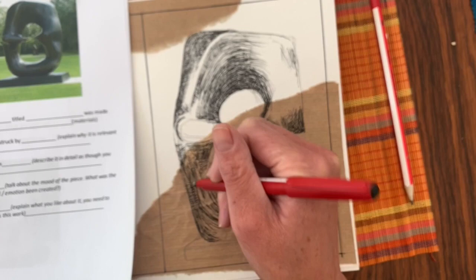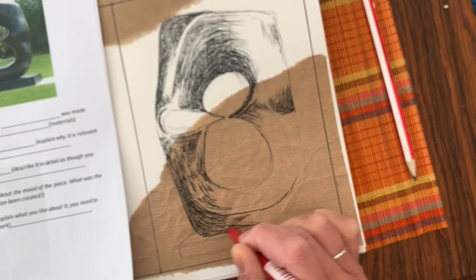Here I'm starting to cross-hatch to show the darkest areas, and any areas that are light I leave completely blank.